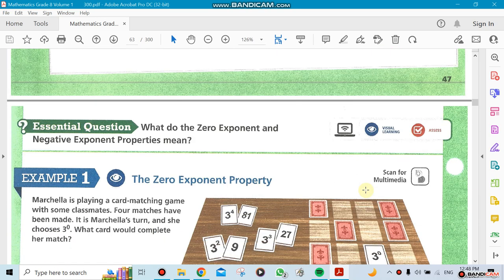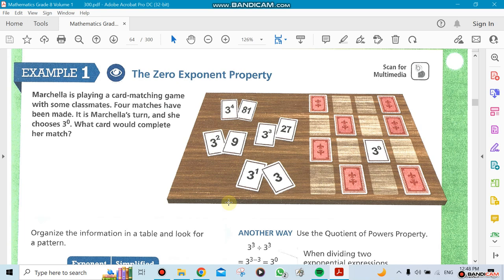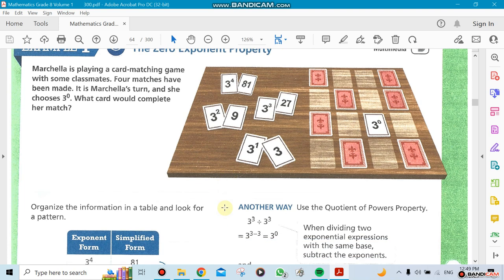In this section we're going to talk about something called the zero exponent property. Now for example, you have an example here when you're dividing 3 to the power 3 divided by 3 to the power 3.